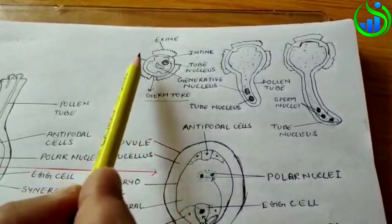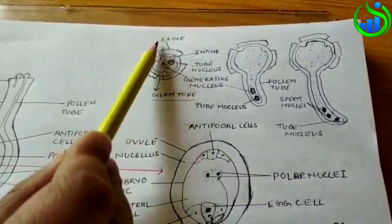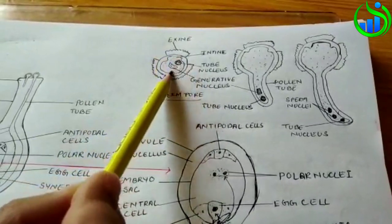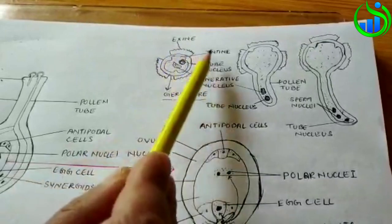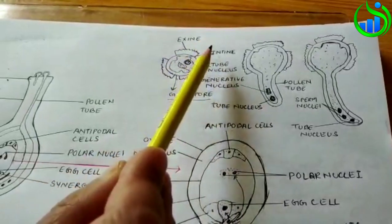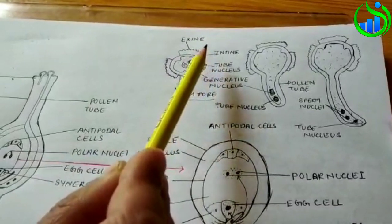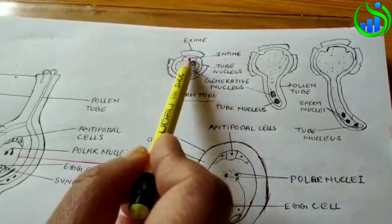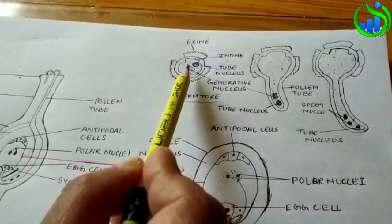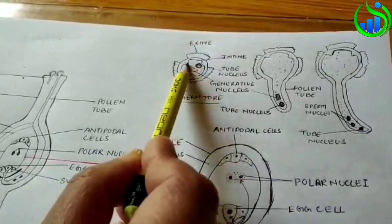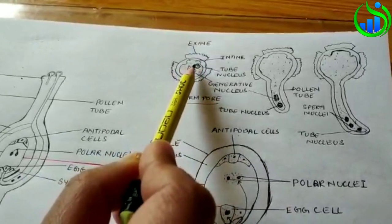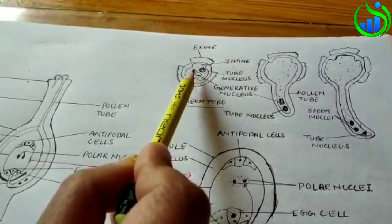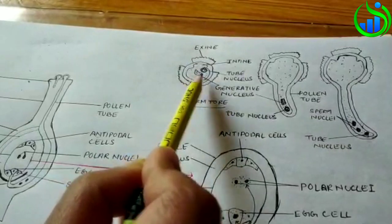Then we have a layer of thin and continuous layer, we have a layer of intine, cellulose, pectin, and we have a particular cell. We have a vegetative cell and a generative cell.